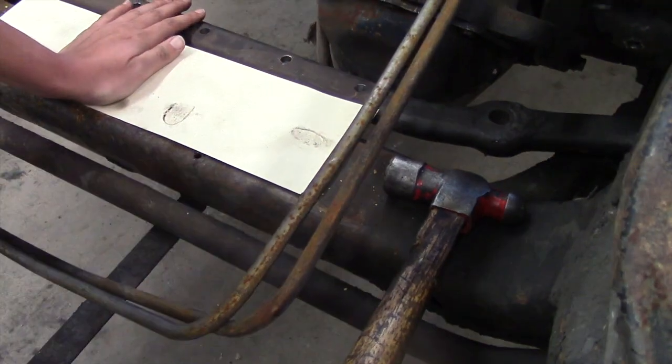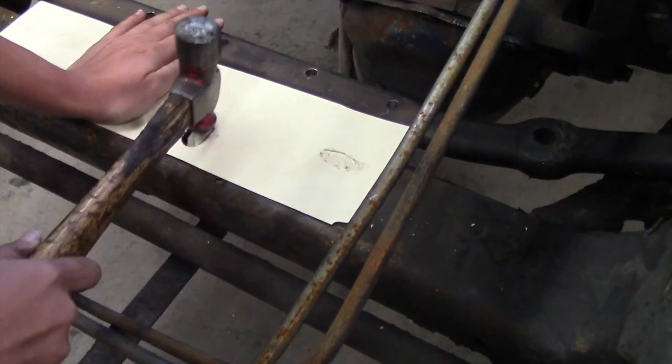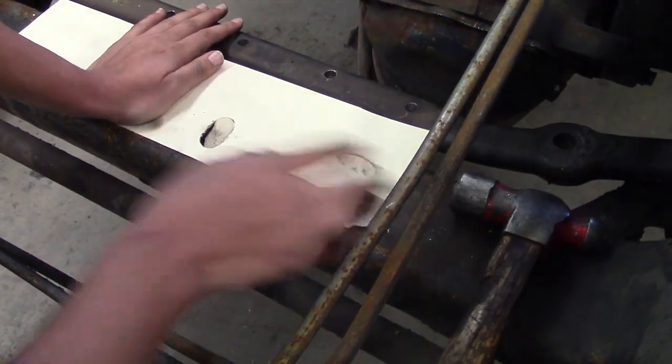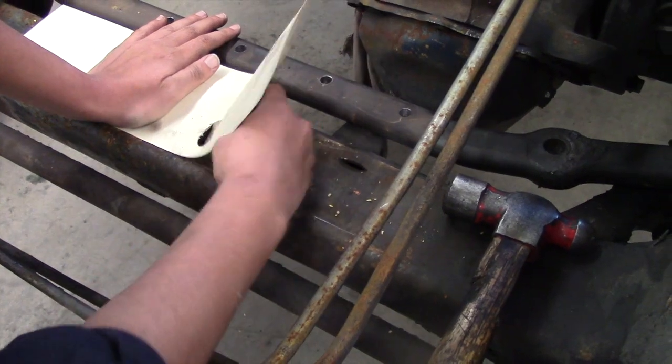Then we used a hammer to mark a template for where there were already holes in the frame, so we could avoid them when drilling to mount the plate. This is a trick commonly used when making gaskets.